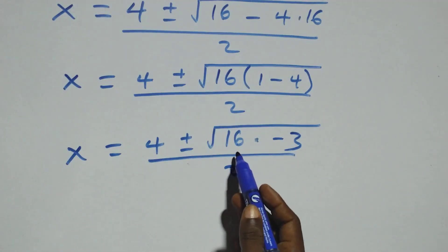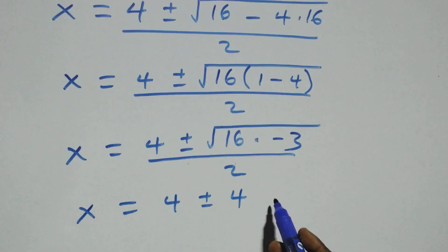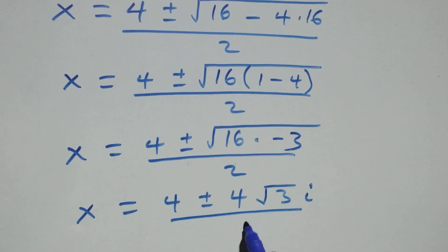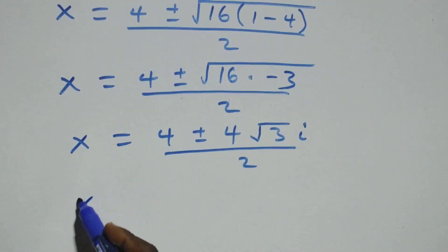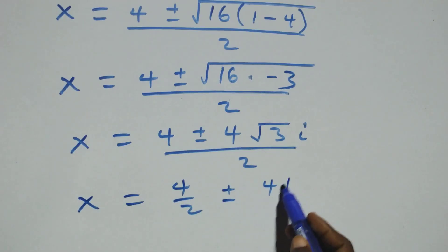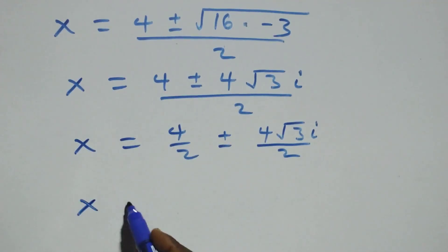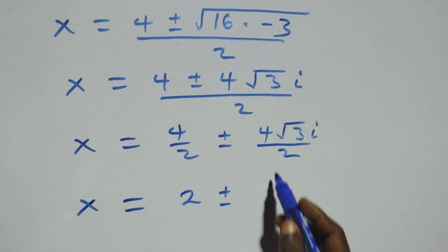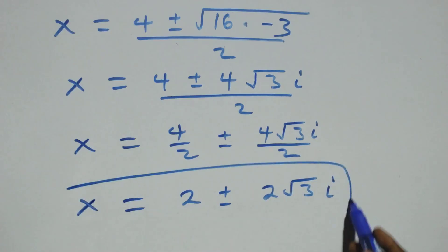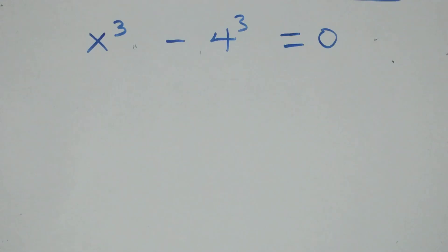Taking the square root of 16 out, that is 4, this becomes x equals to 4 plus or minus 4 times square root of minus 3, which is root 3 times i, over 2. This is the same as x equals to 4 over 2 plus or minus 4 root 3 i over 2, giving x equals to 2 plus or minus 2 root 3 i. These are two complex solutions.